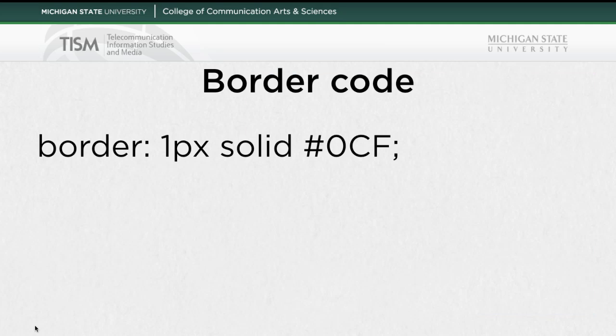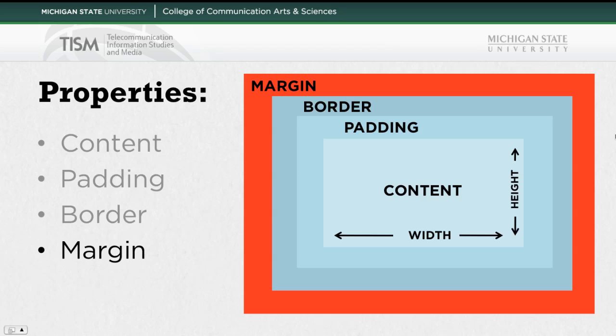So the border code can be written shorthand style. You can write it like border-color, border-style, border-width separately. Or you can do them all the same: border, colon, then set the width, then the style — in this case solid — and then set a color.